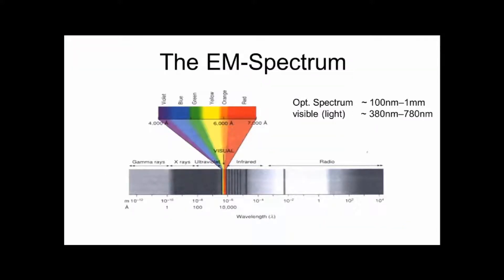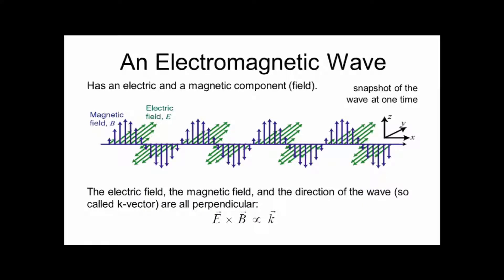We're dealing with light waves here, not ultrasound waves. So we have to look at the electromagnetic spectrum. Here we are in the optical regime — visible light, 380 to about 780 nanometers. These are the wavelengths used for imaging. The wavelength gives you a rough estimate of achievable resolution — basically half the wavelength. So using violet-blue light, we could achieve resolutions down to roughly 200 nanometers using far-field light microscopy.